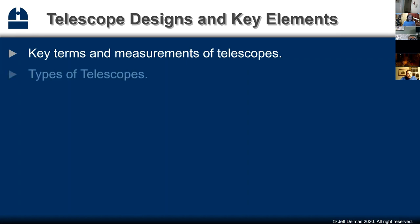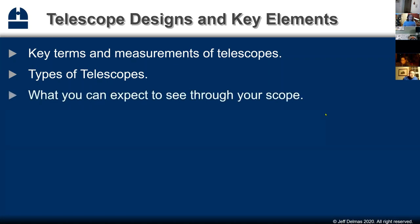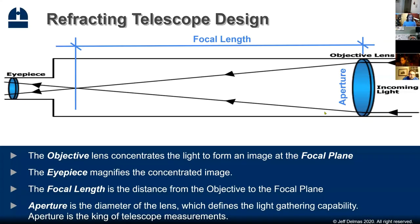So let's get into telescope designs and key elements of those designs. We'll talk about the terms and measurements of telescopes, the various types of telescopes, and about what you can see through your scope and how to learn to use it. This is the same slide we had last week — the Galilean refracting telescope design. All refractors are some variation of this. The big difference between one refractor and another is the complexity of the objective lens.